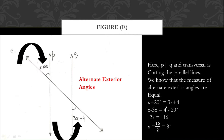In the next step, take variable terms together and constants together: X − 3X = 4 − 20, giving −2X = −16. The negative signs cancel, and dividing 16 by 2 gives X = 8°. That is how you find the value of X in part E.